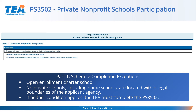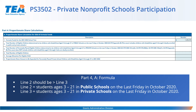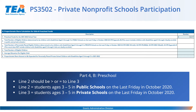In Part 4, Proportionate Share Calculations, please note that Line 2 should be greater than Line 3. Line 2 equals students ages 3 to 21 in public schools on the last Friday in October 2020. Line 3 equals students ages 3 to 21 in private schools on the last Friday in October 2020. Part A was for IDEA-B formula, and in Part B we look at Proportionate Share Calculations for IDEA-B Preschool Funds. Line 2 should be greater than or equal to Line 3. The system will provide an error message if Line 3 is greater than Line 2.